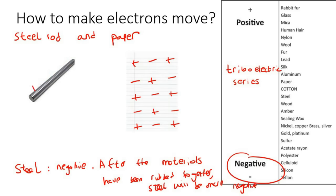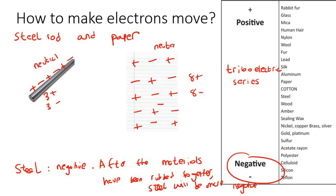Let's say both the steel and paper start neutral - equal amounts of positives and negatives. When we rub them together, the steel goes lower on the table, so it becomes more negative, whereas the paper is higher up on the table, so it's going to be more positive.